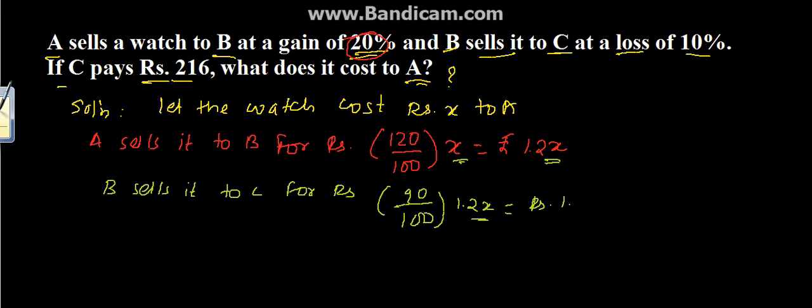So here we have taken the cost price for B, which will come to rupees 1.08X. Now we know that C had paid 216, so we can write that 1.08X is equal to 216, because it is given in the question that C has paid 216 rupees.